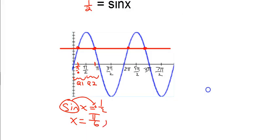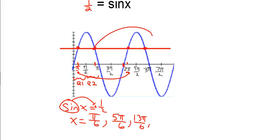So x equals pi over 6 is an answer. In the second quadrant, that angle pi over 6 becomes 5 pi over 6 — I used the reference angle and put it in the second quadrant. But it also happens further along the graph. What value of x produces sine of one half again? That would just be the coterminal angle to pi over 6. You add 2 pi: 2 pi plus pi over 6 is 13 pi over 6. And the coterminal angle for 5 pi over 6 would give 17 pi over 6.